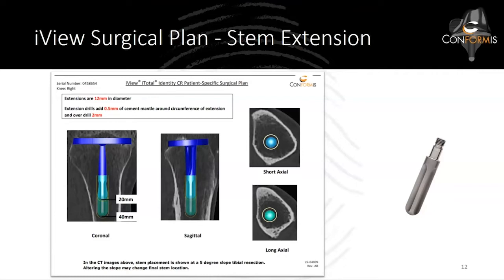There's a question about experience using the new stem extension. I love it — it's simple and doesn't take any time. You basically just unscrew the little plastic cap on the end of the stem and screw on the stem extension, which takes about 10 seconds. I use it on all my obese patients with a 40 millimeter stem. I don't see any reason to stop at 20 millimeters unless you have significant slope and you're worried about the longer stem hitting a cortex. It's been very simple and a nice value-add for obese patients.